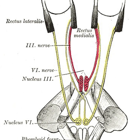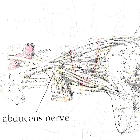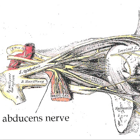The nerve enters the orbit through the medial end of the superior orbital fissure, passing through the common tendinous ring to reach and innervate the lateral rectus muscle of the eye.